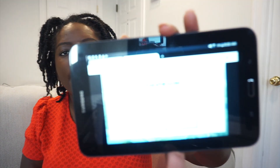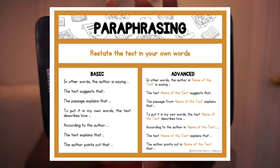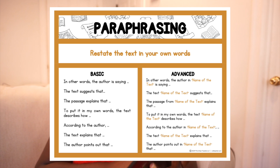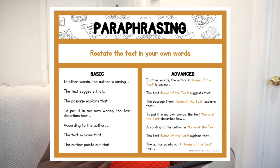Now we moved from direct quotation to paraphrasing as a way to cite textual evidence. I showed the poster again with basic and advanced stems. We then read an article about New Delhi and practiced stems like 'in other words' and 'the text suggests.' Some classes did the exit ticket; some didn't — I realized they needed more practice actually going through the article and citing evidence properly, so I used what they wrote in their notebooks as my data instead of the exit ticket, and that worked pretty well.